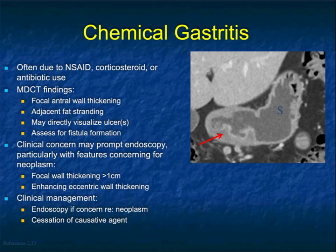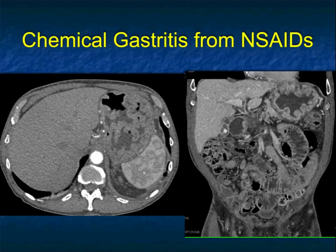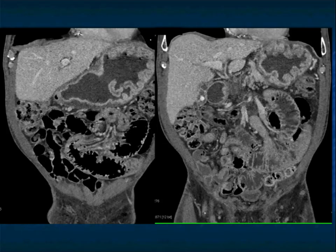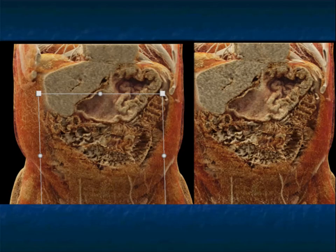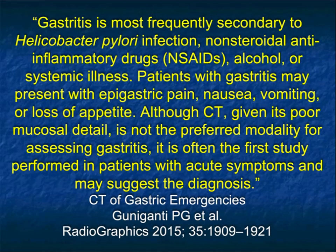Endoscopy and biopsy will be the way you often reach the diagnosis — other times the history can be more helpful. Look at this patient with abdominal pain and weight loss — look at the fold size in the fundus. It could be bad gastritis, but you'd have to make certain the patient doesn't have a tumor. This was chemical gastritis. Look at the fundus compared to the body — really impressive appearance. And here it is with cinematic rendering. Even with cinematic rendering, the markedly thickened folds make you think more about malignancy than simply inflammatory disease.